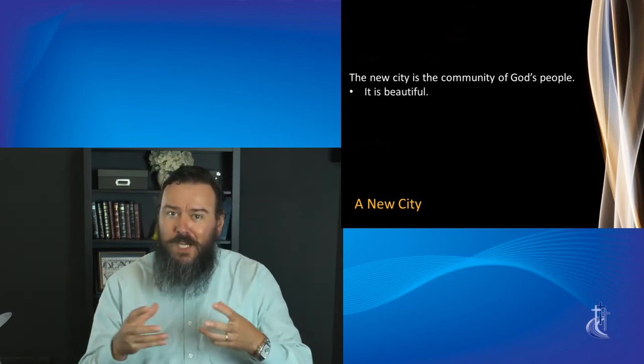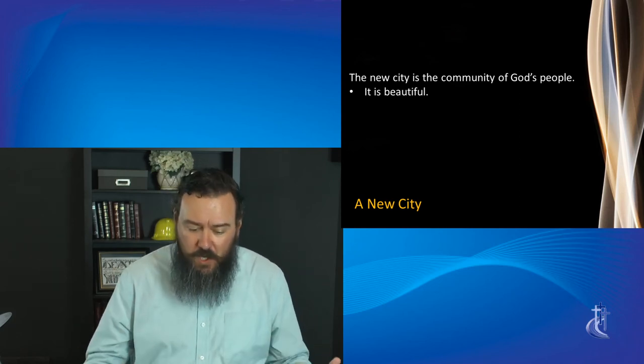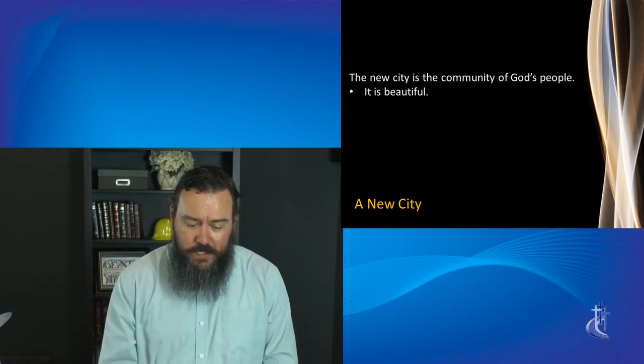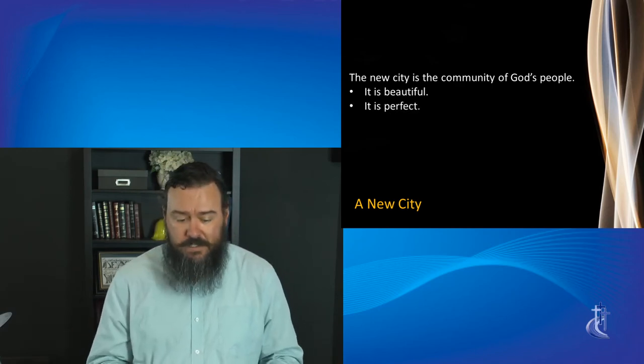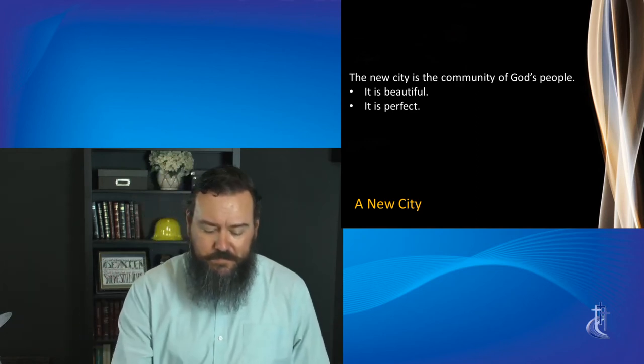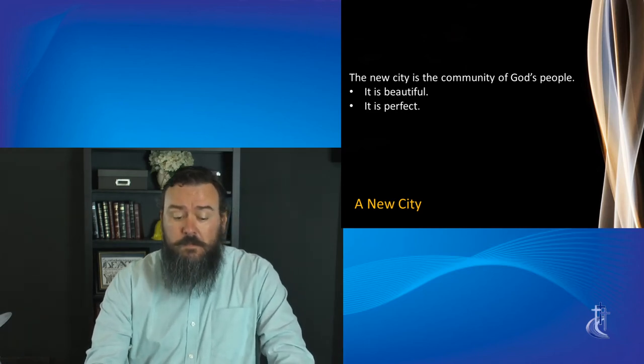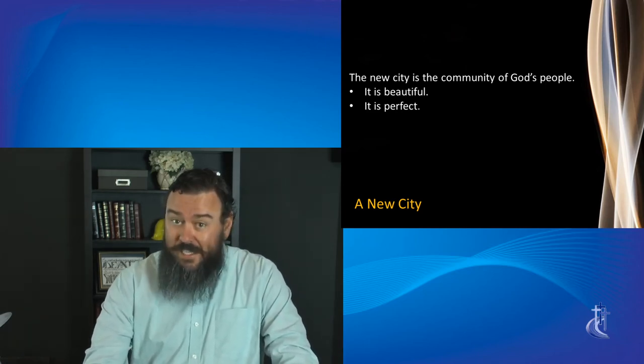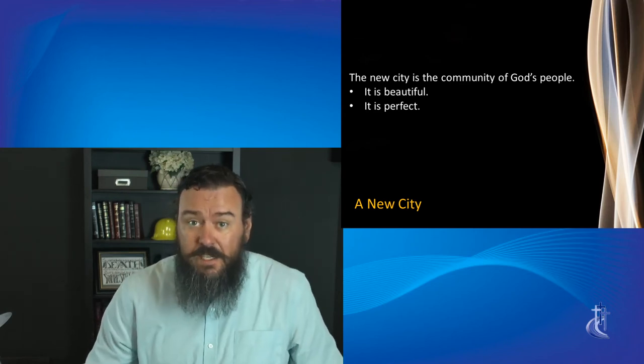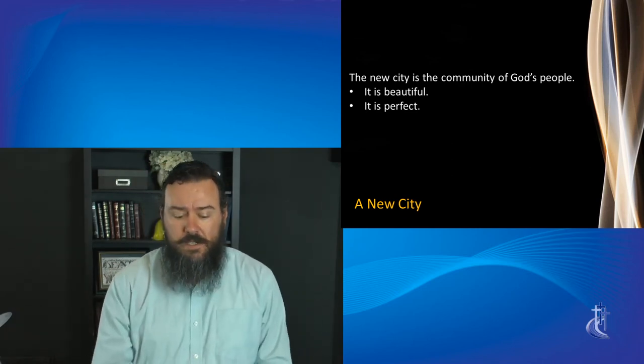And so we see the nature of the city in its description. It's God's people, but it's also beautiful. The city is made up of gold and precious stones and pearls. And then we see that it is perfect. Perfect symmetrical proportions. Have you ever heard someone say, the church is imperfect because it's full of imperfect people? Well, this city, this community is perfect because it is full of perfected people, clothed with perfection of Christ and made new and holy for all eternity.